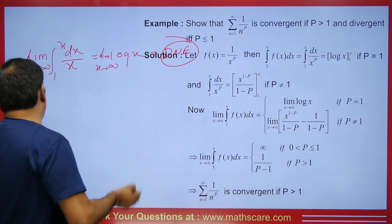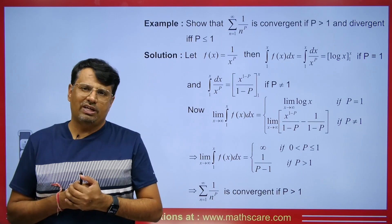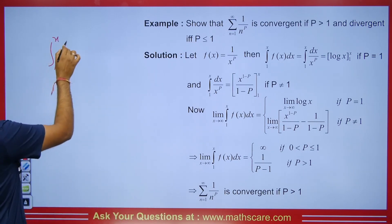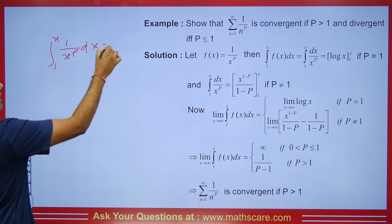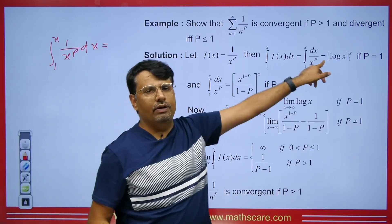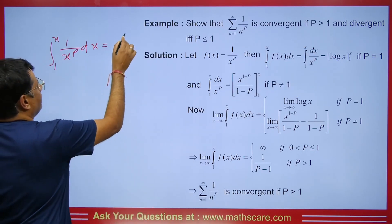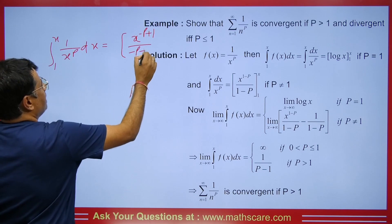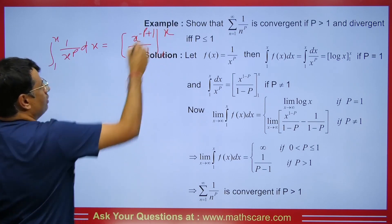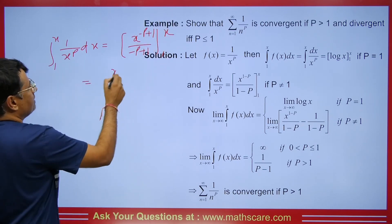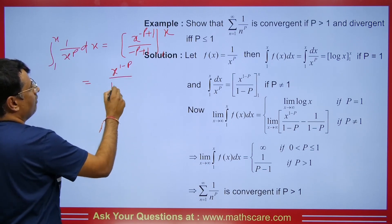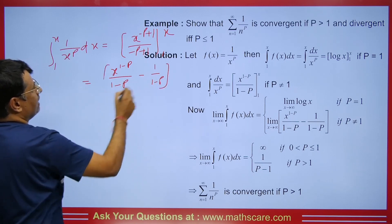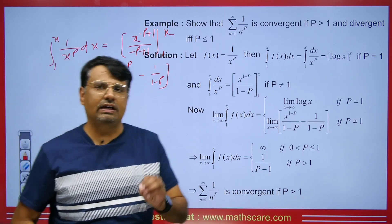Now we will see what happens if p is not equal to 1. We calculate the integral from 1 to x of 1/x^p dx. When we integrate this, it becomes x^(1-p)/(1-p), with limit from 1 to x. When we solve this, we get x^(1-p)/(1-p) minus 1/(1-p). There are two cases: first, if the value of p is greater than 1, and second, if the value of p is less than 1.